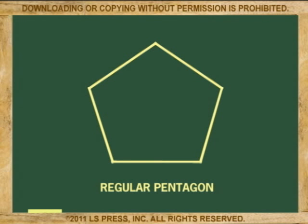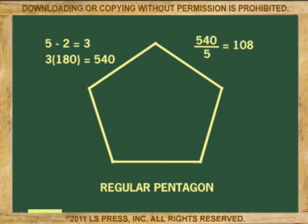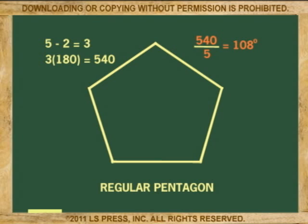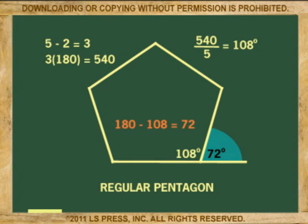For example, the procedure to find the exterior angle of a regular pentagon goes like this. Apply the equation to find one angle — subtract 2 from 5, you get 3. 3 multiplied by 180 gives 540, which is the sum of all the angles. 540 divided by 5 gives 108, which is the size of one interior angle of a regular pentagon. 180 minus 108 equals 72 — that is how much one exterior angle of a regular pentagon measures.